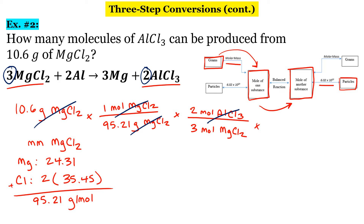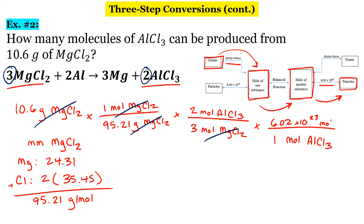Our final step: we're going to use Avogadro's number to go from moles of aluminum chloride to molecules of aluminum chloride. For every one mole of aluminum chloride, we have 6.02 times 10 to the 23rd molecules. Now you can see here why it's important we don't abbreviate, because moles and molecules — if I were to abbreviate molecules as MOL, it would be easy to confuse those with moles, and they're not the same thing. When I crunch the numbers, I get 4.46815 times 10 to the 22nd.